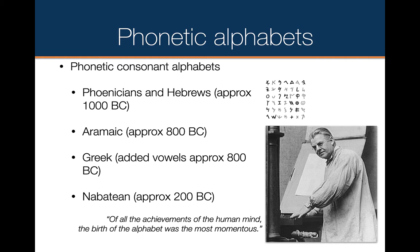The timeline for the development of phonetic alphabets: the Phoenicians and the Hebrews, who were very close to each other geographically, really started developing their alphabet systems about 3,000 years ago. The ancient Aramaics, about the same time. The Greeks also about the same time as the Aramaics. And then the ancient Nabataeans, a little bit more recently — maybe about 2,300 years ago.